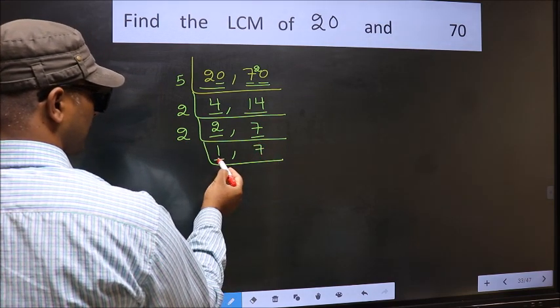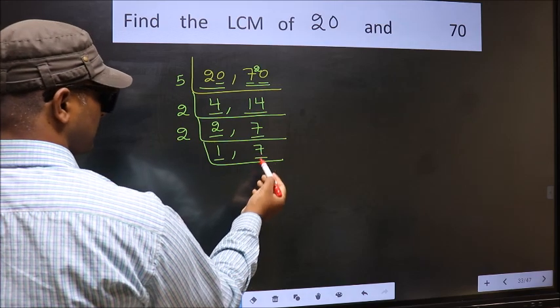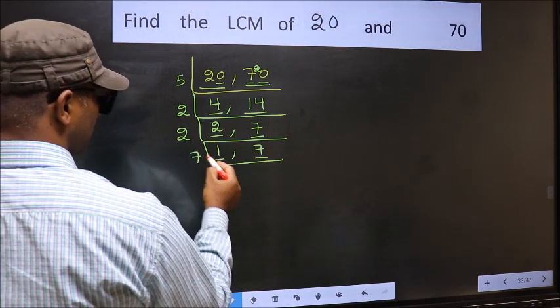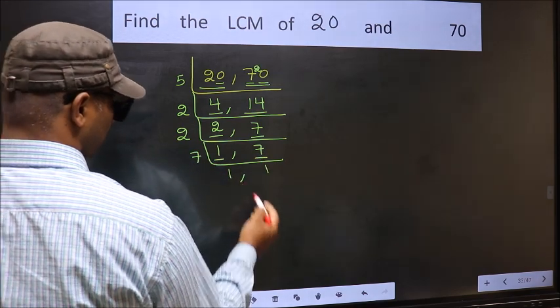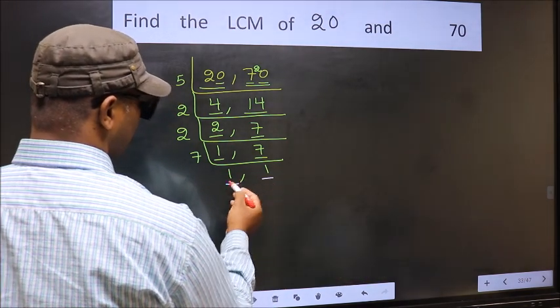We got 1 here. So focus on the other number 7. 7 is a prime number, so 7 times 1 is 7. So we got 1 in both the places.